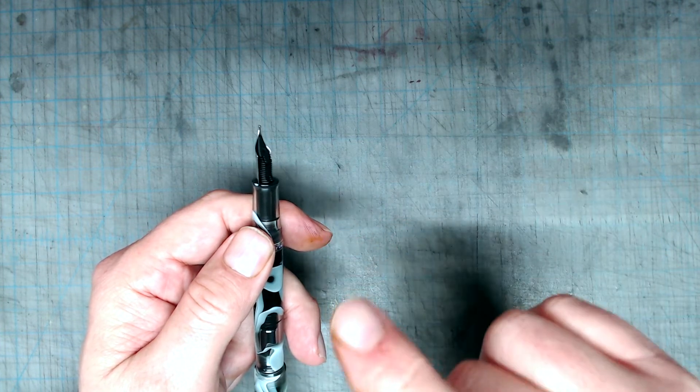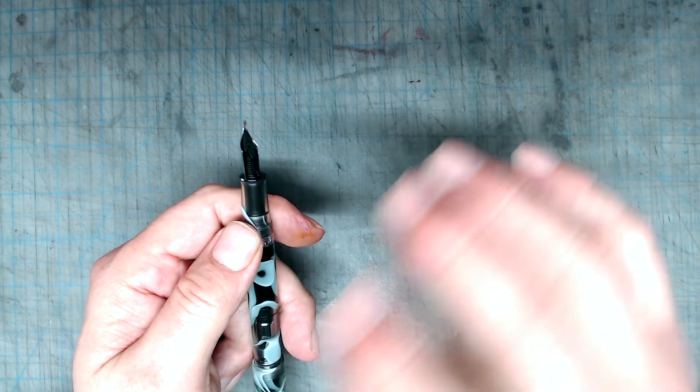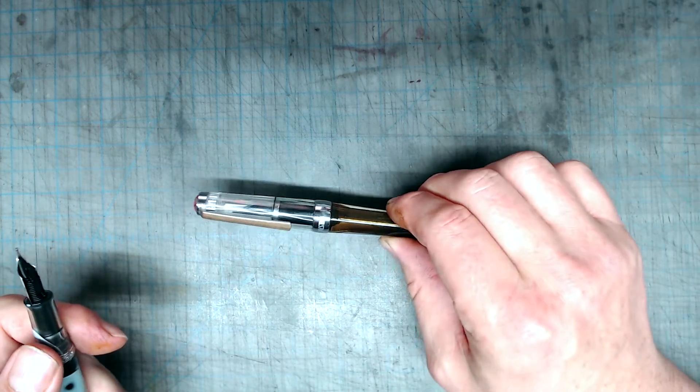And these nibs fit very tightly into the housing, so it's not like you can quickly switch nibs in and out, like you can with the Twsbi Vac, which has a very loose housing unit, which allows you to easily slip the nibs in and out.